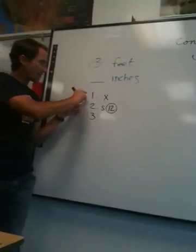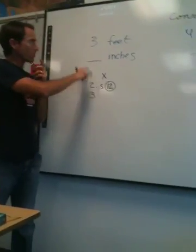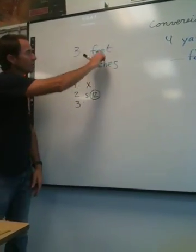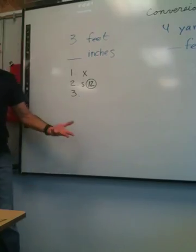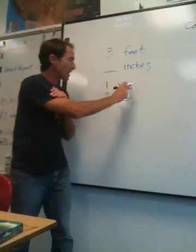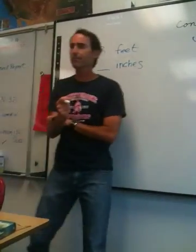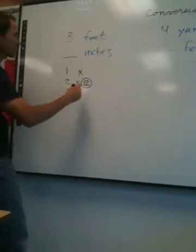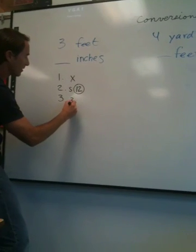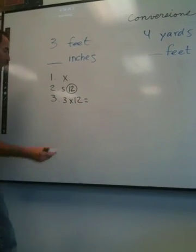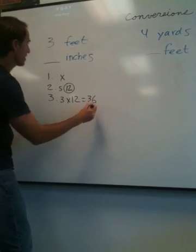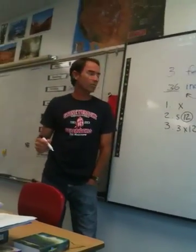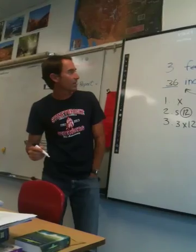So first step, we're going from big to little. We're going to multiply. Second step is, what's the special number? How many inches in a foot? 12. What do you think my third step is going to be? Any guesses? 3 times 12. You got it. We are going to do 3 times 12. So we're going to take the 3, times 12 equals what? 36. We're going to take this number and plug it in, and we're done. 3 feet equals 36 inches.